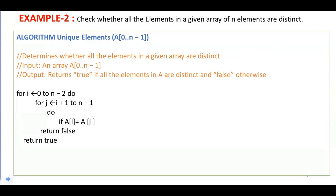The logic is to compare adjacent elements. If no two elements are found to be the same, then the list consists of distinct values. If any two elements are the same, then the list is not distinct. We run i from 0 to n-2, and j runs from i+1, meaning the adjacent element.